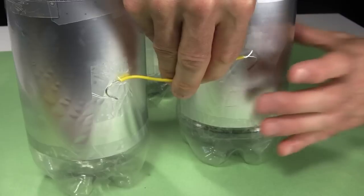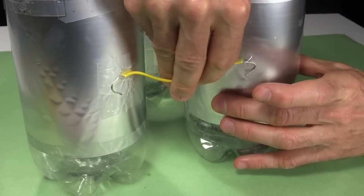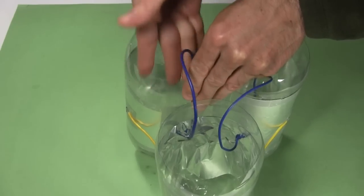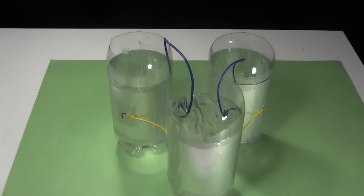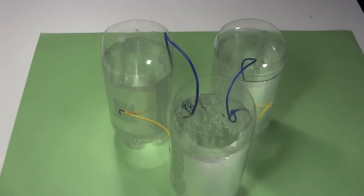So I make two more. Then comes the wiring. I connect the outer aluminum foil electrodes together and the inner electrodes together. That results in them being in parallel with their capacitances adding up.